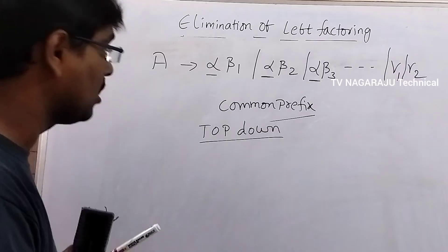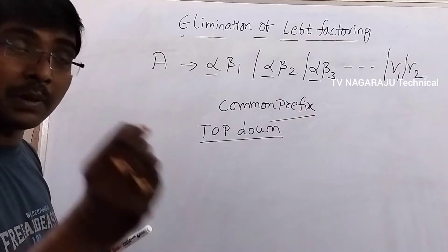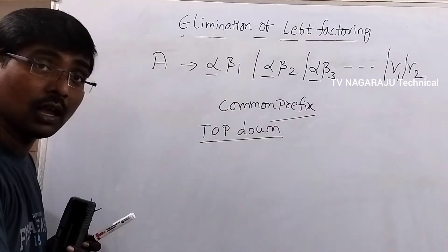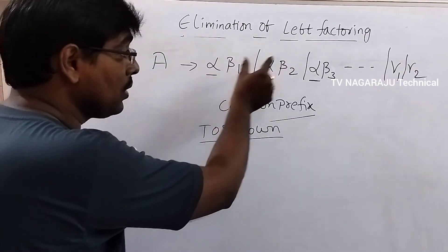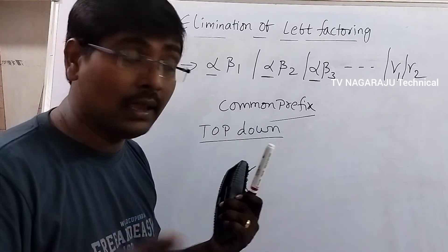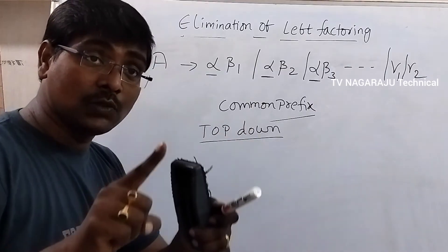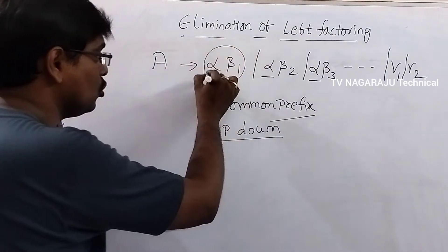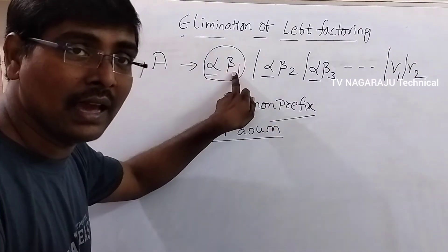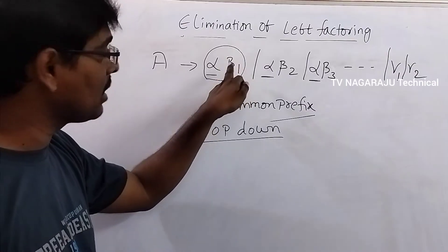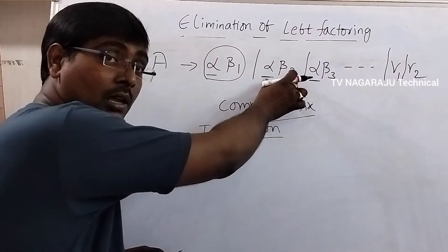In the process of string derivation, if my string starts with alpha, then from A which production do you have to consider — this one, or this one? We don't know, because each production starts with alpha. If you select one and during the derivation the remaining string characters are not available, then you have to backtrack.